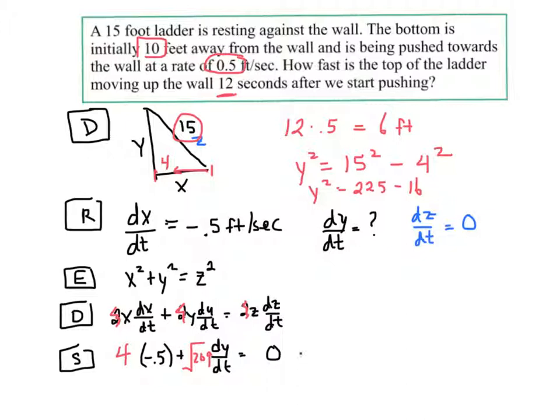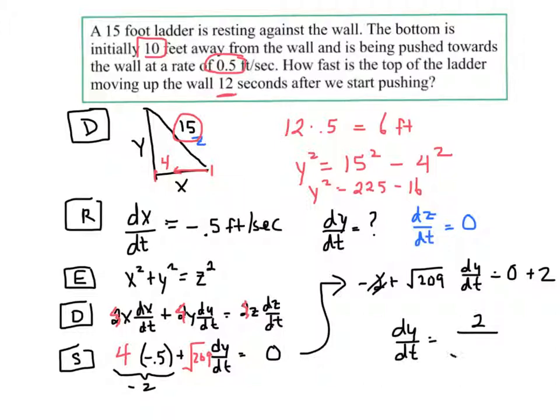So, let me kind of go up here to finish solving it. Of course, this is negative 2. So, I have negative 2 plus the square root of 209 dy dt equals 0. I could add 2 to both sides and divide by the square root of 209. And I have dy dt is equal to 2 over the square root of 209. And the unit would be feet per second.